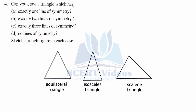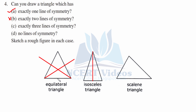Question four: can you draw a triangle which has exactly one line of symmetry? Yes — an isosceles triangle has exactly one line of symmetry. Exactly two lines of symmetry? No, there is no triangle possible with exactly two lines of symmetry. Three lines of symmetry? Yes — an equilateral triangle, with lines from each vertex to the midpoint of the opposite side. No lines of symmetry? Yes — a scalene triangle.